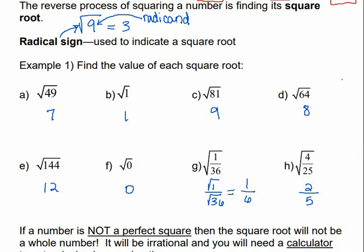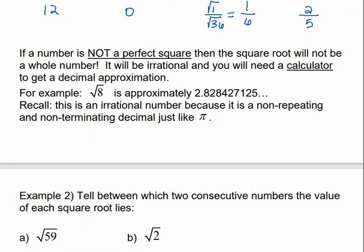All of those were perfect squares, but not all numbers are perfect squares. If a number is not a perfect square, then the square root will not be a whole number — it's going to be an irrational number, and you would need a calculator to get a decimal approximation. For example, the square root of 8 is approximately 2.828427125, and it keeps going. It doesn't stop and it doesn't repeat. An irrational number is a number that doesn't stop and doesn't repeat, just like pi.